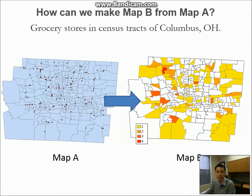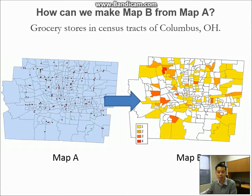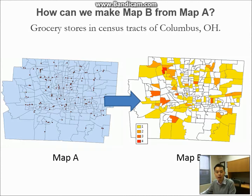Today we will talk about some basics about spatial analysis in GIS. If you look at this map, the map on the left side shows all the grocery stores in Columbus, Ohio overlapping with the census tracks. On the right is a summary of the number of grocery stores in each census track, and map B on the right side is more informative because it tells you the concentration of the grocery stores in this area. So how can we make a map from map A to map B? That is the map we are going to make for this assignment.